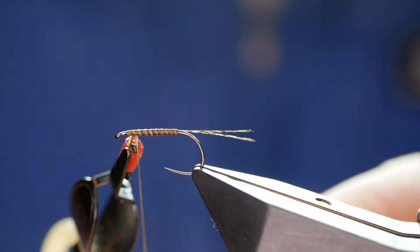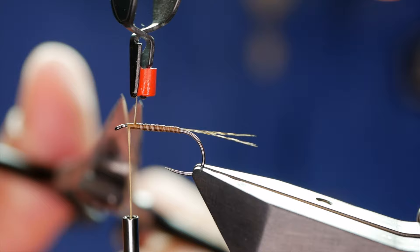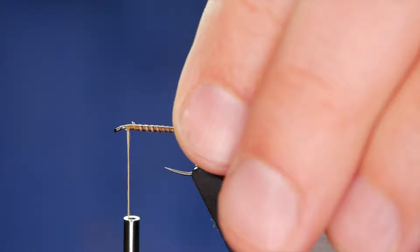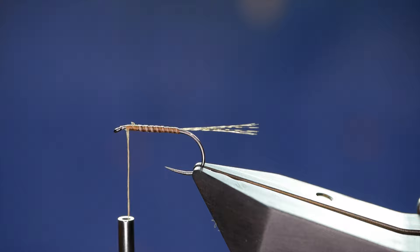Now just trapping in my herl with a couple of turns. And if I was feeling brave I would just snap that away now. But I'm not feeling so brave. I'm going to just snip it away with my scissors. Sometimes you just get a feel for when you can get away with stuff. And I just don't feel like pulling it would work on this occasion. Now as I was saying herl is really delicate.